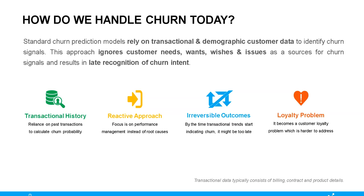If we look closely, all of this is static data. Where I live, my age group, how much I pay — that generally doesn't change month to month. It also doesn't include the needs, wants, and wishes of the customer after purchase. For example, after buying a phone two years ago, whether I'm happy or not isn't held by the sales or marketing team, so we end up detecting the propensity-to-churn signal a little late, creating loyalty problems.